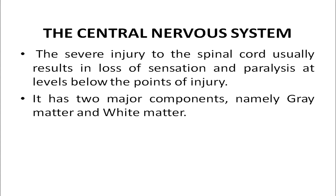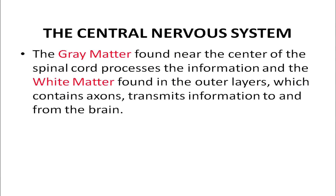You may have heard cases where spinal cord injury causes paralysis — this happens because the neurons cannot act effectively. The spinal cord has two major components: the grey matter and the white matter. The grey matter, found near the center of the spinal cord, processes the information received from outside. The white matter, found in the outer layers of the spinal cord, contains axons that transmit information to and from the brain for the muscles to act.